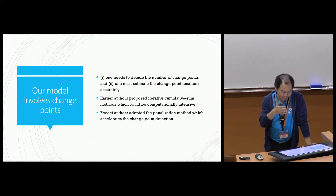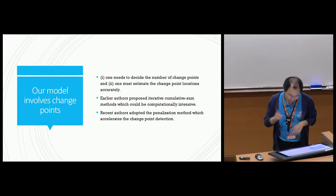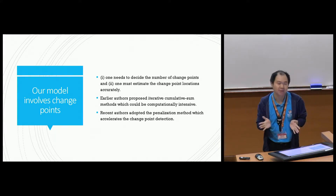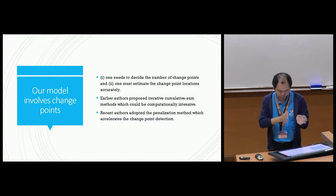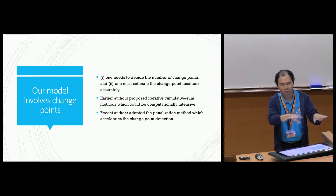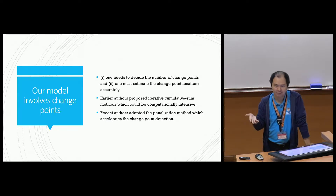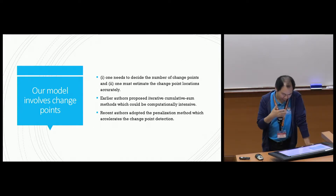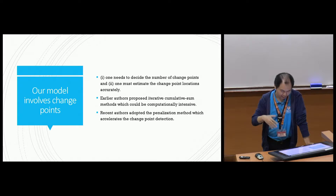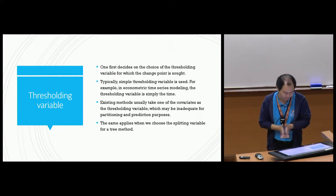Even in the change point literature, there are many important methods proposed. One very popular type is the cumulative sum method — a binary segmentation approach using iterative cumulative sums, repeatedly splitting the interval into two parts. This method is very accurate but tends to be time-consuming. Recent authors have used penalization methods to improve calculation speed, and that is also what we are going to adopt.